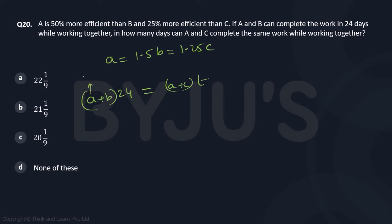So, if I write this as 1.5, this total becomes 2.5 B into 24 is equal to, again A is 1.25, so 2.25 C into t.